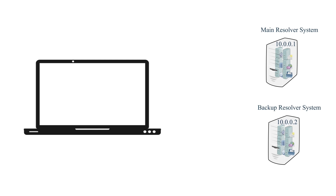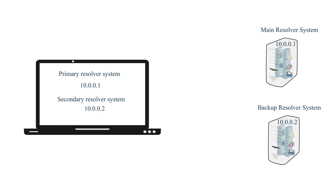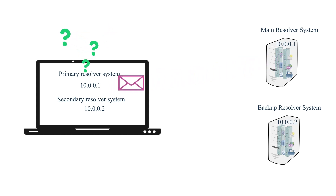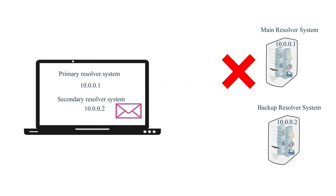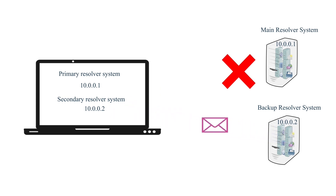For this, you need to configure the IP address of the first resolver system on network computers as the primary resolver system and the IP address of the second resolver system as the secondary resolver system. Network computers will use the primary resolver system to resolve queries. If the primary resolver computer fails or loses connectivity, they will use the secondary resolver system to resolve their queries.